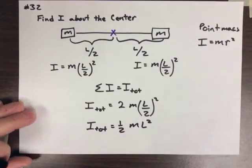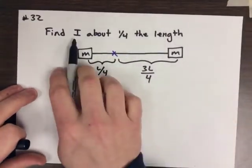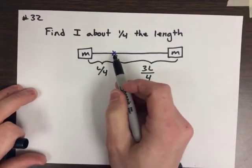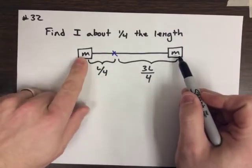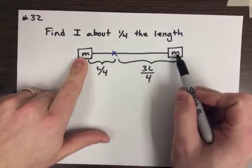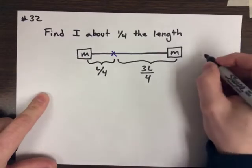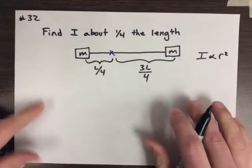All right. For the second part, now it asks me to find the moment of inertia about one-fourth the length. Okay, so now I've changed my moment of inertia's location. Now, notice that I've actually moved this one in closer, so it should have a smaller moment of inertia. But I've moved this one further away, so it has a much larger moment of inertia. And if you remember, moment of inertia is proportional to r squared. Okay, keep that in mind.